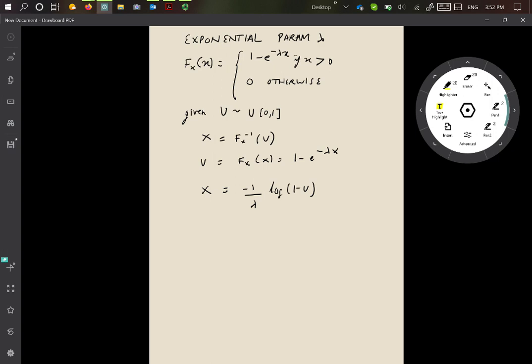Now it turns out that both u and 1 - u are distributed uniformly in the range 0 to 1, so this is basically the same as u. Therefore, we can get x = -1/λ log(u).